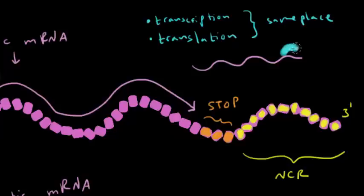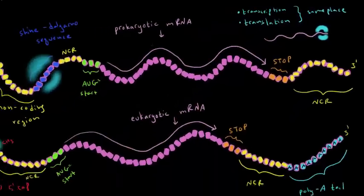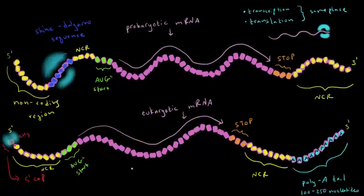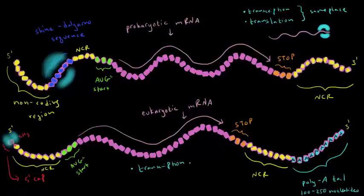But in eukaryotic cells, things are a little bit different. So transcription happens in the nucleus and translation happens in the cytoplasm where there are ribosomes. And so the mRNA, after it's made,